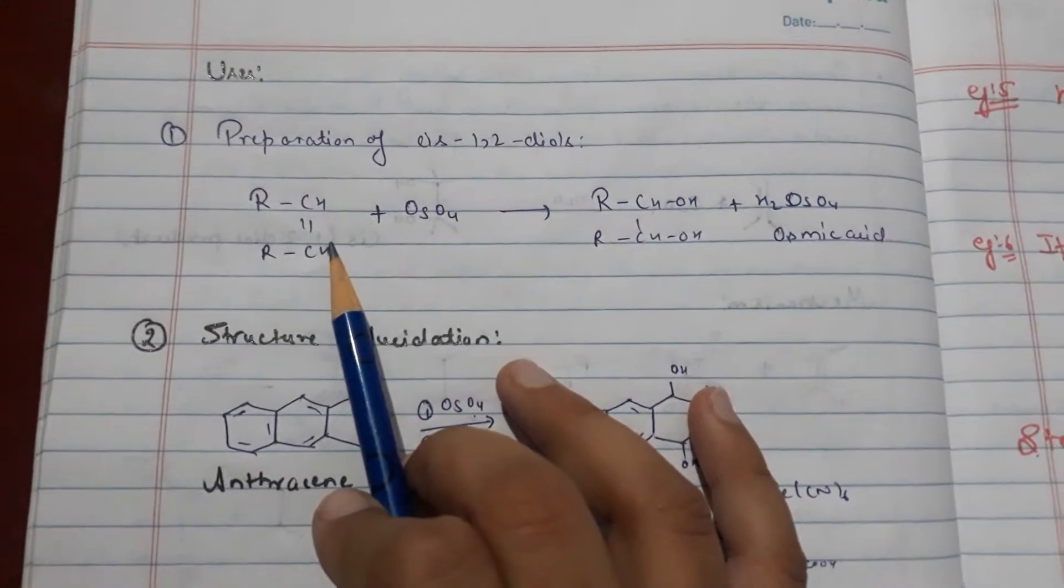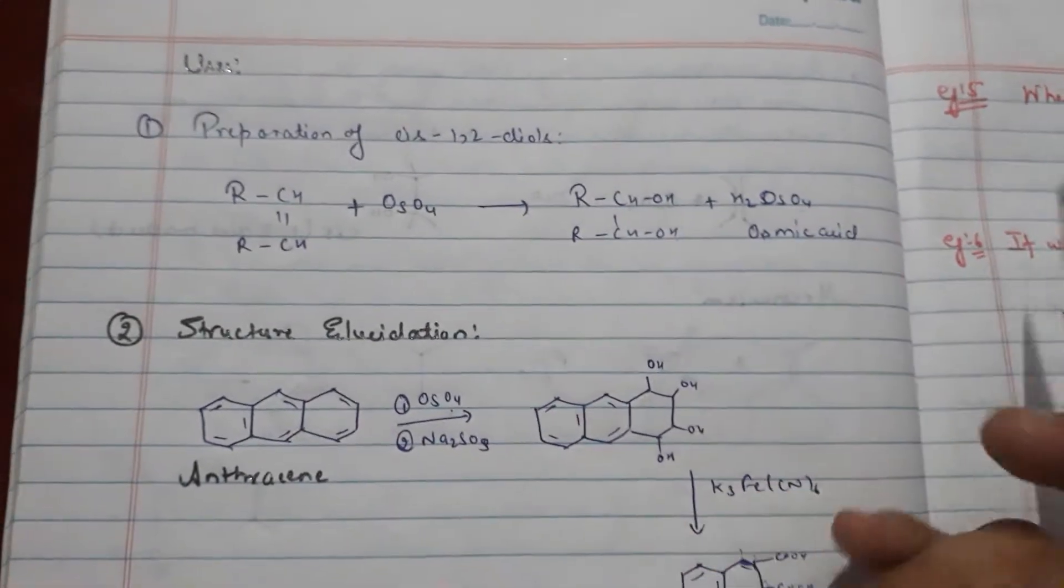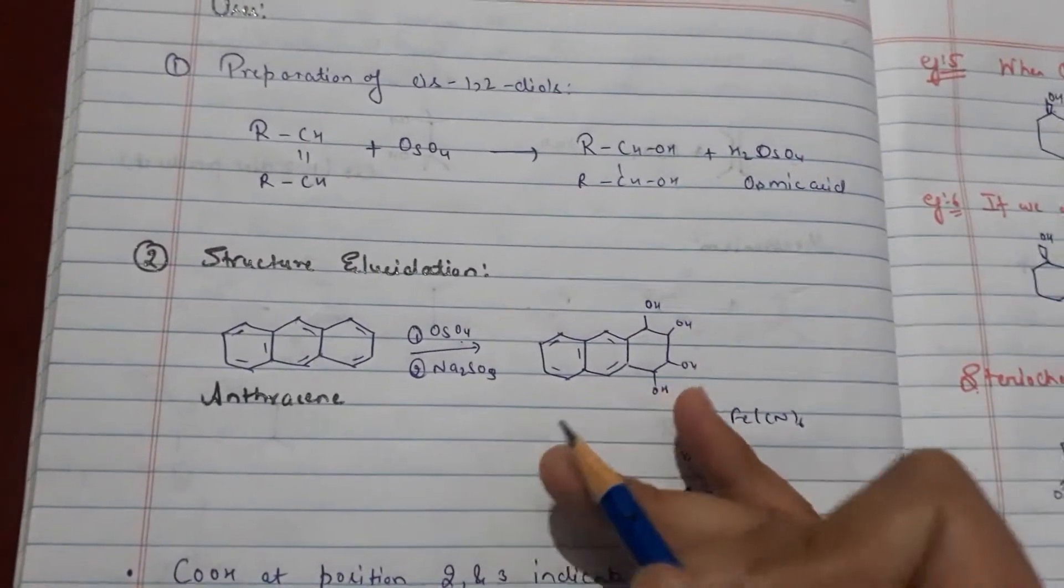First cis-diol, alkene with OH, OH will be side product. Structure elucidation: we use osmium tetraoxide.